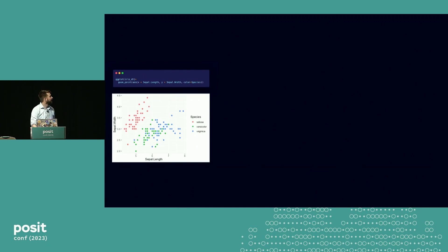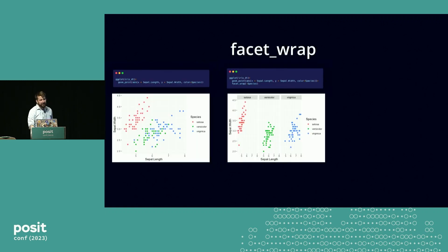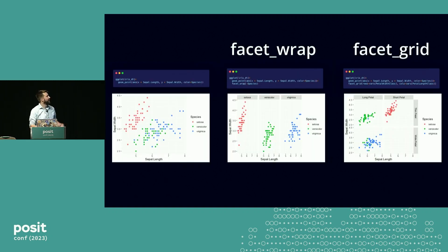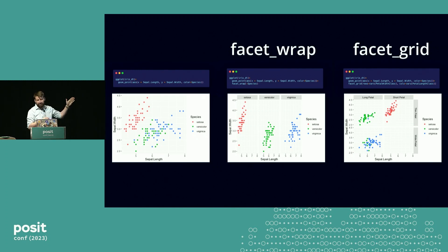Let's revisit our favorite IRIS dataset. Here's a simple scatter plot of sepal length versus sepal width. I can use what's called facet_wrap, which gives me one little panel or facet — one little graph — for each of the iris species. Then there's also facet_grid, which is a little different — it relies on categorical data. In this case, I added a column called petal width class, splitting into cases where the petal is wide or thin. To use facet_grid, you have to have these categorical features.